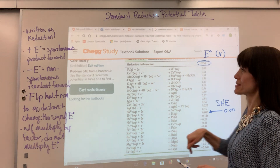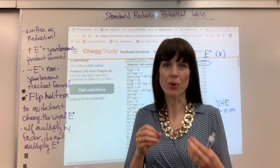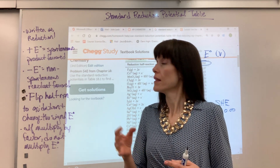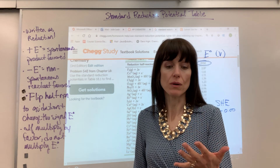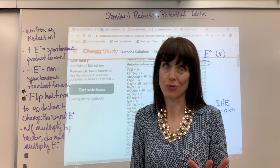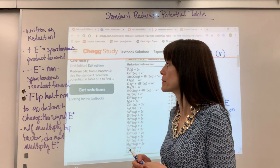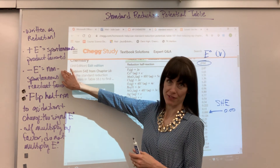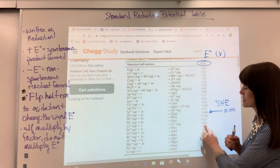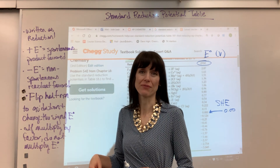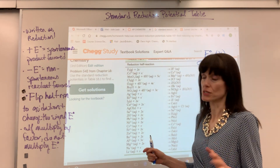Now the numbers — super important. A positive E is spontaneous; it means that it's product favored. And that, as you'll see, is going to be related to our delta G and our K. Watch the videos on Gibbs free energy and equilibrium connected to electrochemistry. Negative E — like our lithium down here, those negative values — means it's not spontaneous, reactant favored, and it's going to require energy to force that reaction to happen.